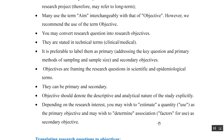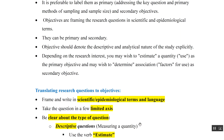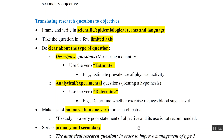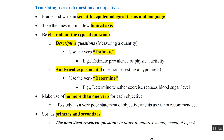Objectives should denote the descriptive or analytical nature of the study, and for that we use specific verbs. To translate your research question into an objective, frame and write your research question in scientific or epidemiological terms. Be clear about the type of question — whether descriptive or analytical. If your research question is descriptive, measuring a quantity, then use the verb 'estimate'. For analytical or experimental questions where you want to test a hypothesis or compare groups, use the verb 'determine'.